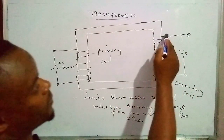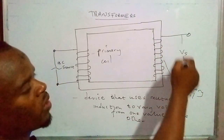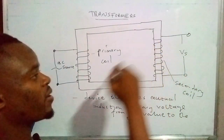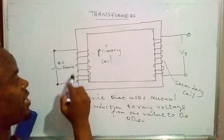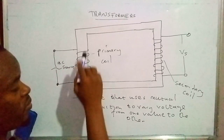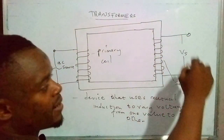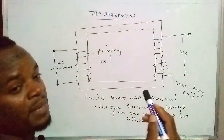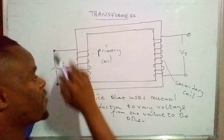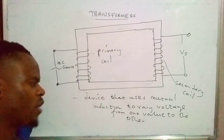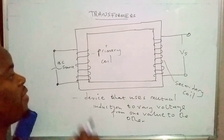This secondary coil is connected to the load — this is the part where electric appliances may be connected. So here we have alternating current flowing through the primary coil on this side, and on the other side current is induced. I've already gotten into the components of a transformer, so let's finish up.